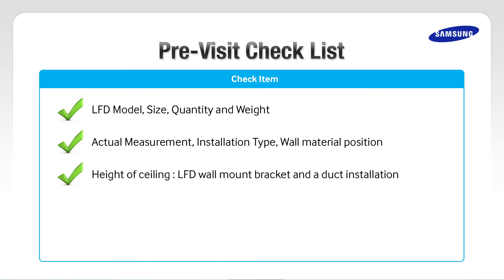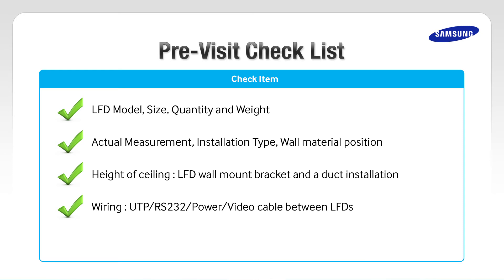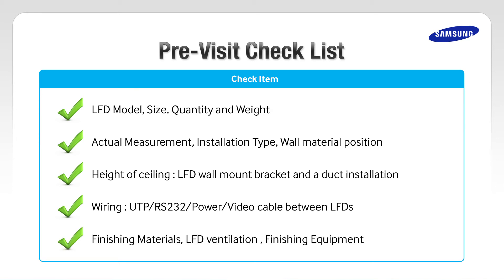Check the height of the ceiling and the height of the LFD wall mount bracket, and install a duct inside or outside. Check the wiring and UTP RS232, power, and video cable that you will be using between LFDs. After install, check finishing materials, LFD ventilation, and surrounding finishing equipment.